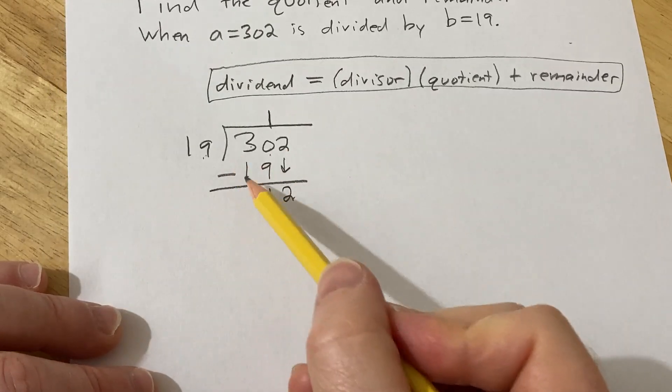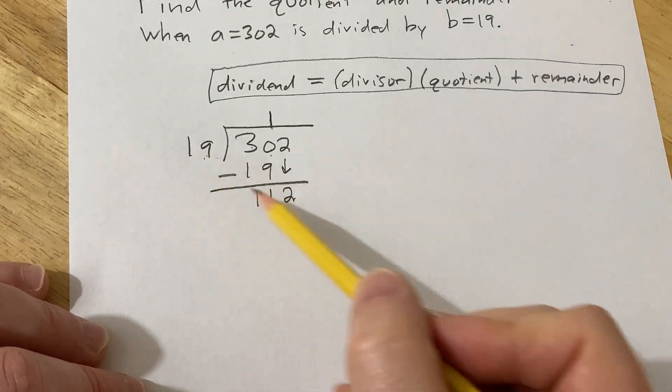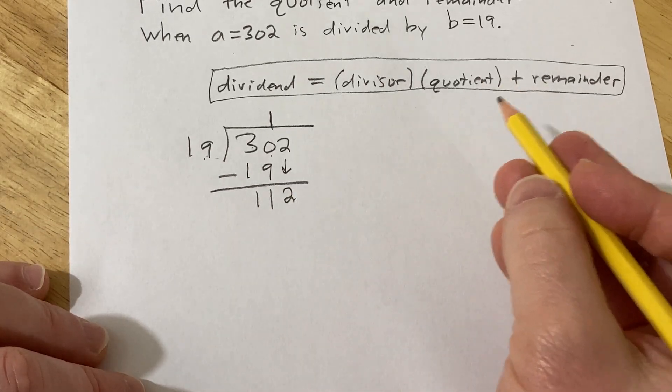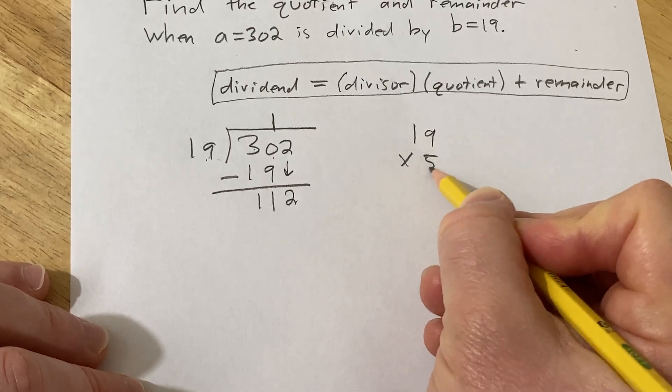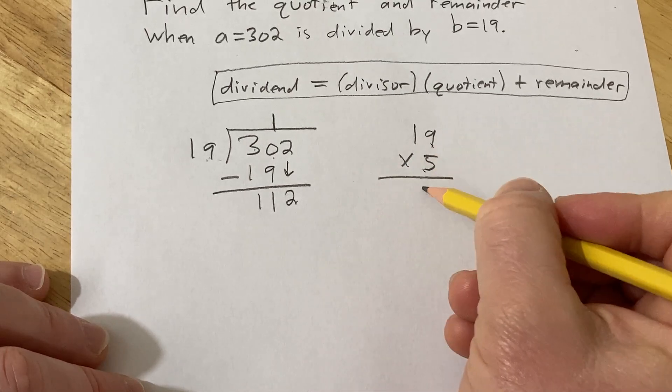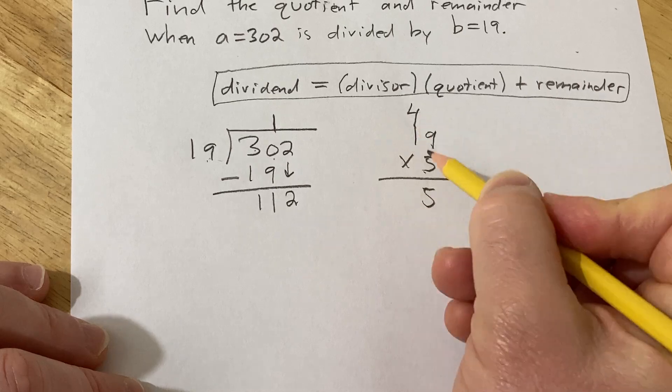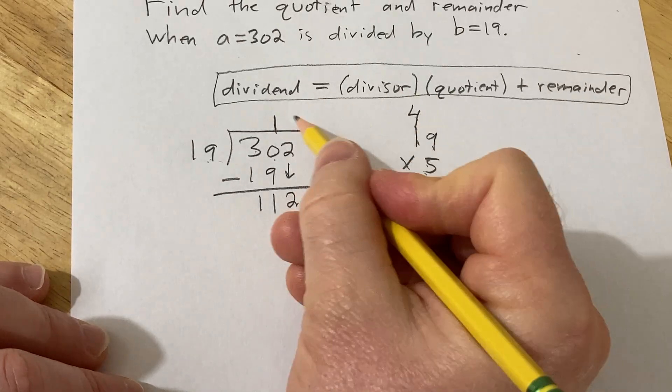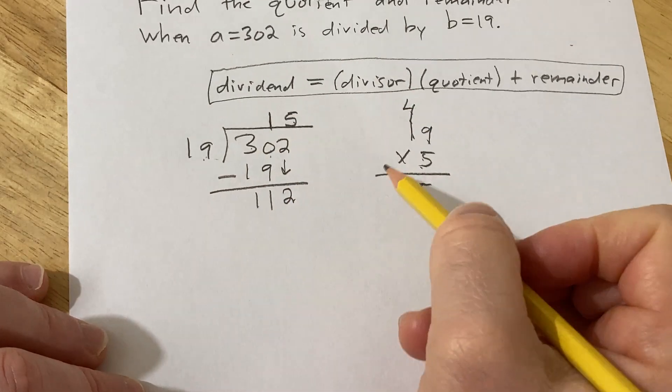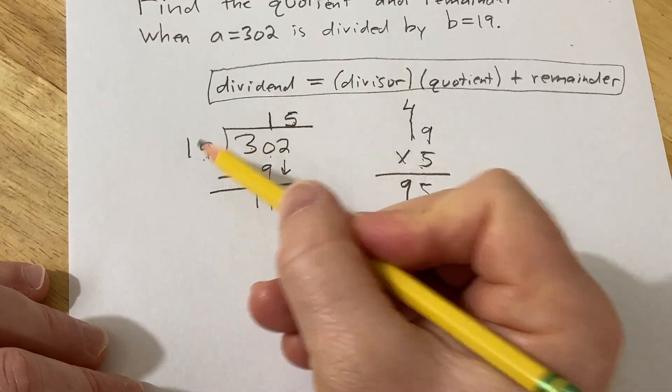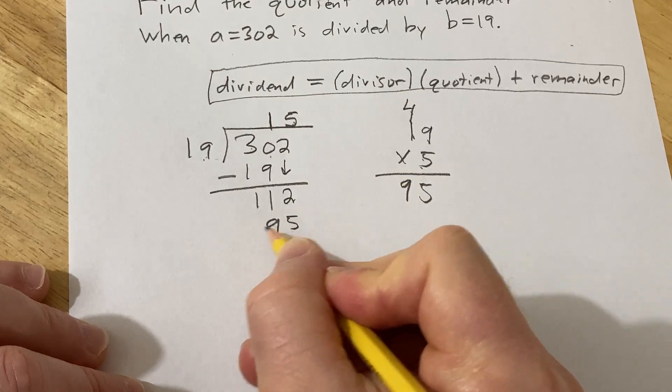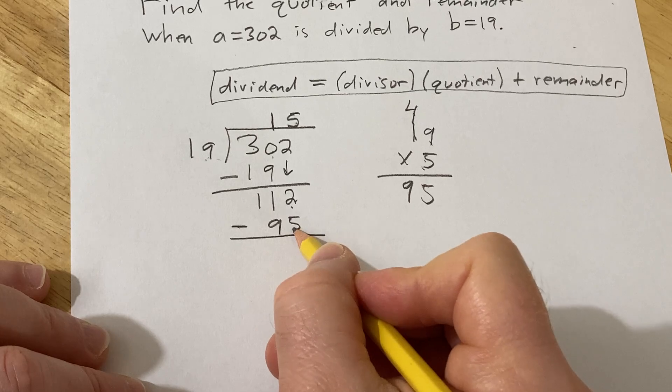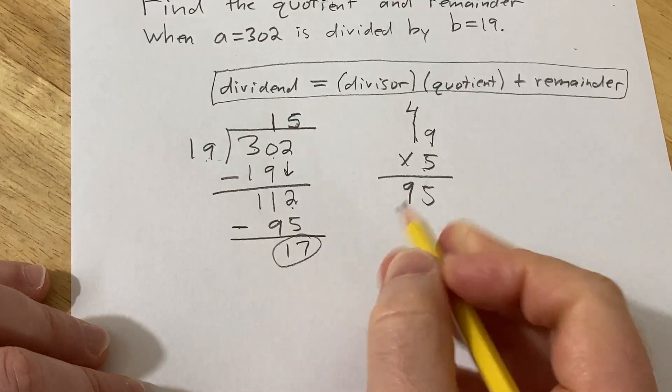Now we ask ourselves, how many times does 19 go into 112? I'm thinking 5, because 6 is too many. 19 times 5: 5 times 9 is 45, carry the 4, 5 times 1 is 5, 5 plus 4 is 9, so 95. It goes in 5 times. Put the 5 there, then perform the multiplication. 5 times 19 is 95. Subtract. You have 12 here and 5 here, so you get 17. That's your remainder.